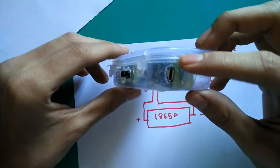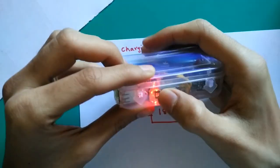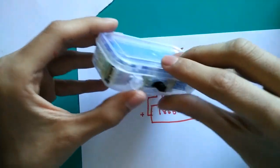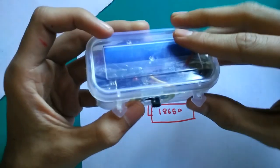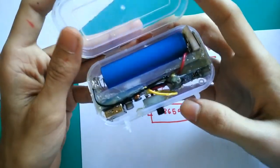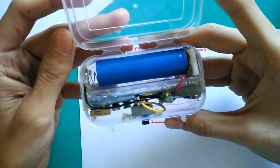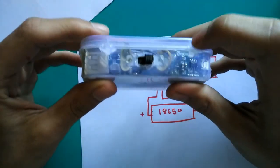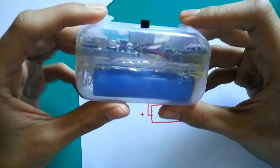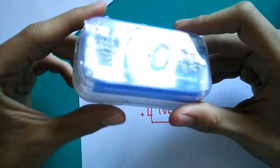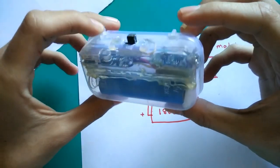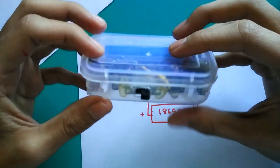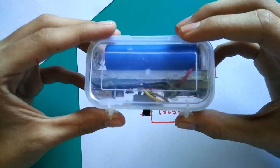This is input charging port, on-off switch, and output charging port. This looks somewhat rough but I am going to paint it in black so hopefully it may look good.